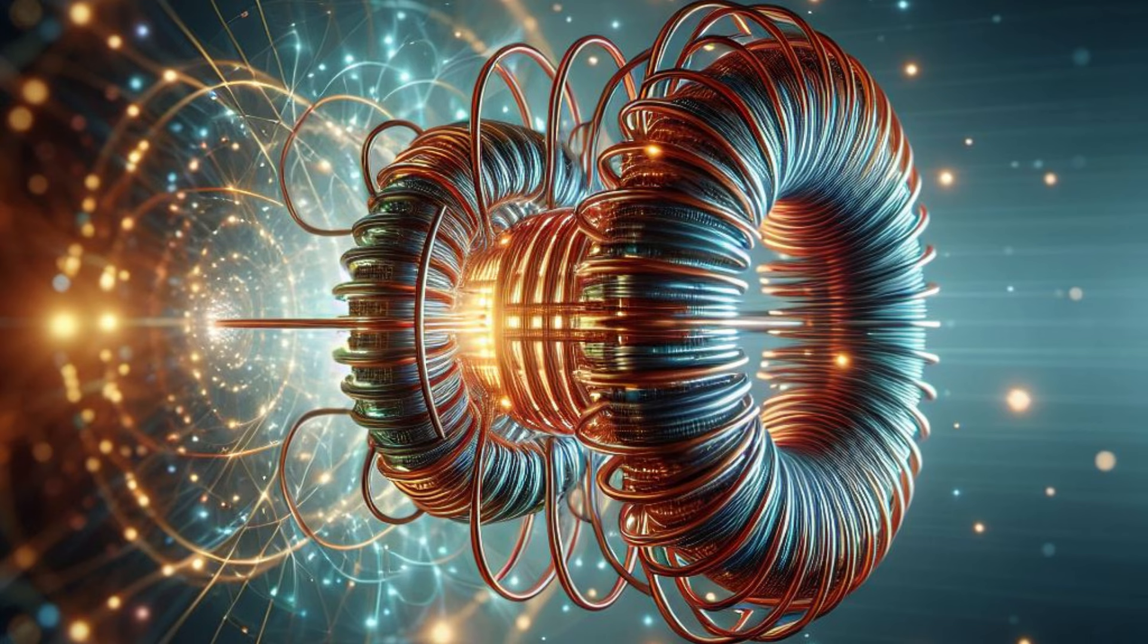But the role of coils doesn't end with cooling. They're also integral to the functioning of washing machines. The electric motor that spins the washing drum is driven by coils. These coils create a magnetic field when electricity passes through them, and this field interacts with magnets attached to the motor's shaft, causing it to rotate. This rotation is what powers the drum to spin, effectively washing your clothes.